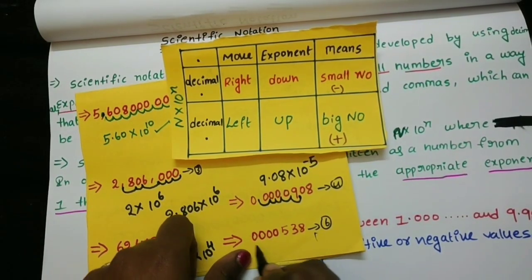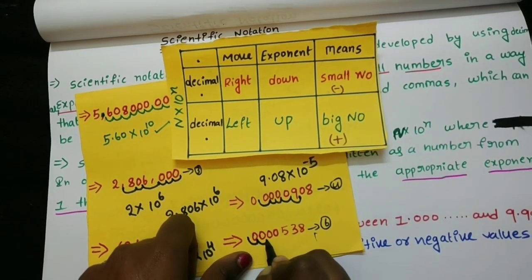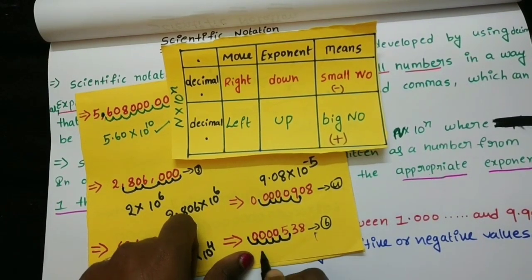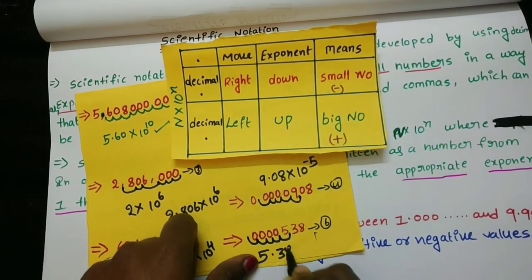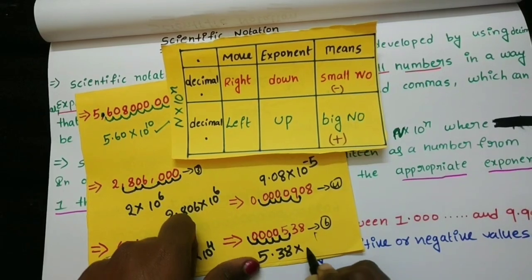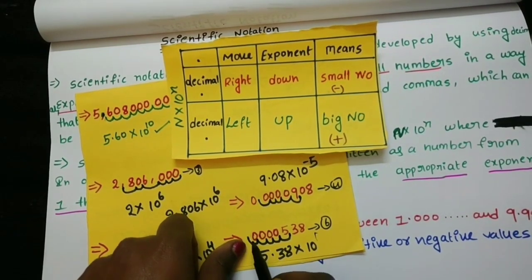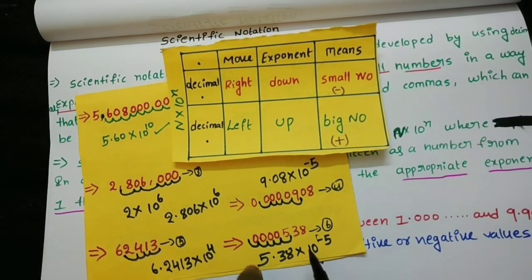The sixth example: counting the decimal places — 1, 2, 3, 4, 5. The answer is 5.38 into 10 to the power of minus 5.